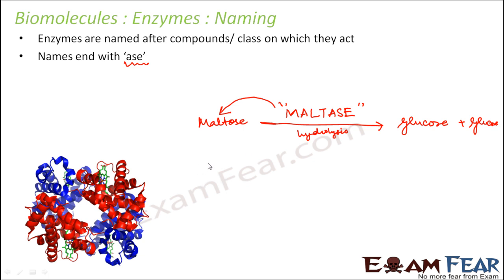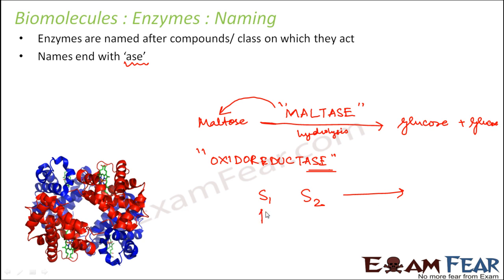Another example is an enzyme called oxidoreductase, which also ends with -ase. Oxidoreductase means oxidation-reduction. If there are multiple substrates, S1 and S2, it will oxidize one substrate and reduce the other. So they are named after the function they perform. Similarly, we have lactase because it acts on lactose, and lipases because they help in the digestion of lipids. This is how normally the trend is to name enzymes.